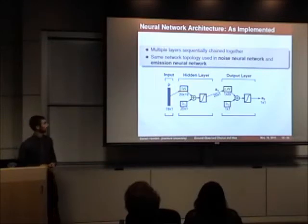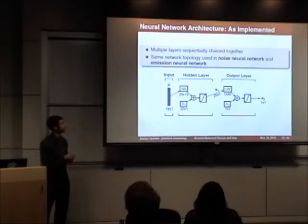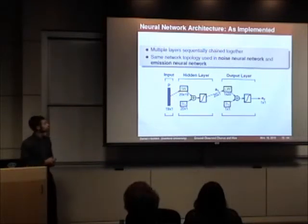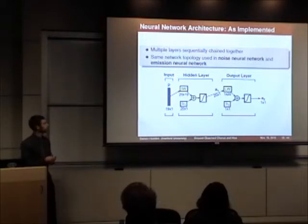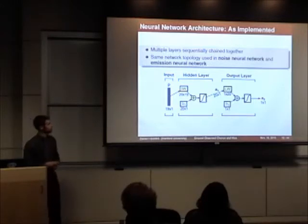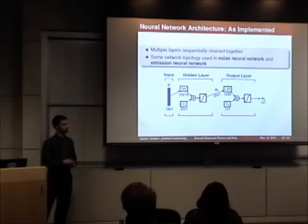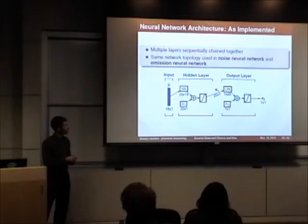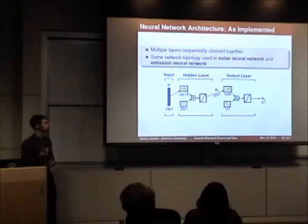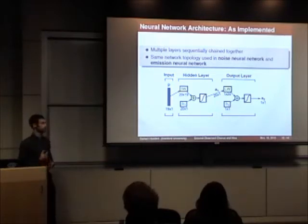Multiple layers may be chained sequentially together, resulting in the final network architecture implemented in both neural networks. In this architecture, the 19 characteristics are received as input, then passed to a hidden layer with 20 parallel neurons. The vector of 20 values is then passed as input to a second output layer, which consists of a single neuron producing a scalar output. In the case of the noise neural network, the scalar output is a binary value — either noise or emission — and in the case of the emission neural network, either chorus or hiss.